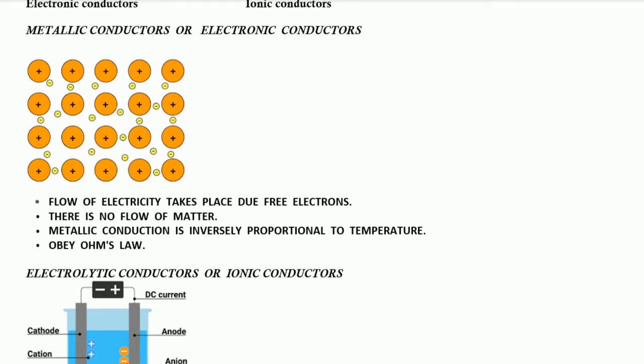We take a metal and pass electricity through it. As we know, metals are good conductors of electricity, so they allow the flow of electricity. But how does electricity actually flow through metals? It flows due to free electrons. In each metal, in the last shell of every metal, there are one or two electrons that are loosely bound to the metal and can be easily detached.